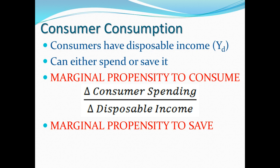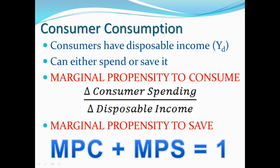It shouldn't be a surprise that the marginal propensity to consume, abbreviated as MPC, added to the marginal propensity to save, MPS, should equal one. For every dollar we earn, a portion goes to spending and a portion goes to savings. From that formula, we can rewrite MPS as equal to one minus MPC — just simple algebra. That's going to become important in a little bit.